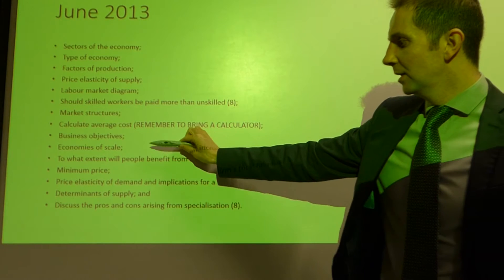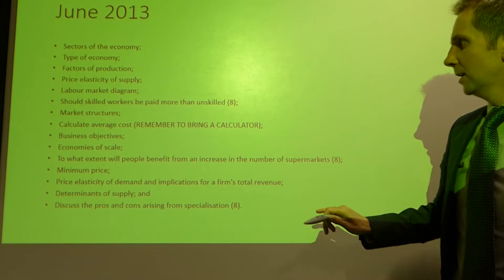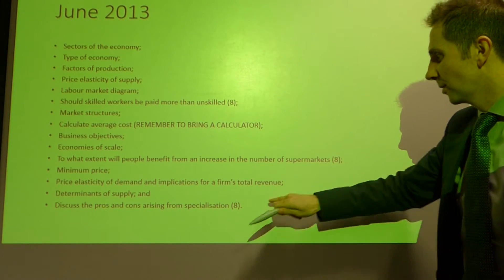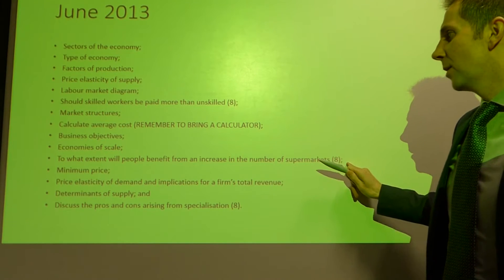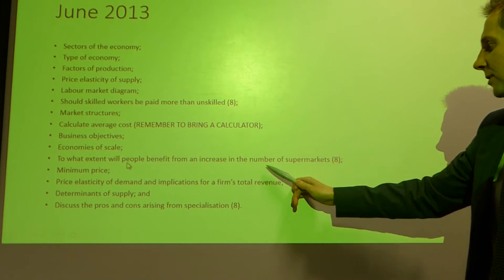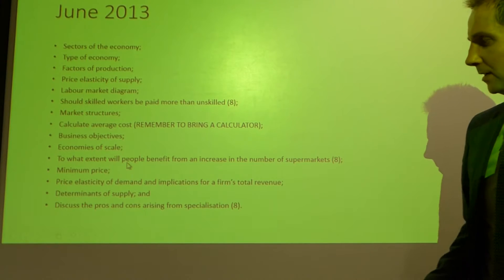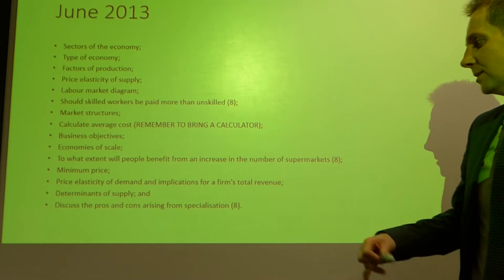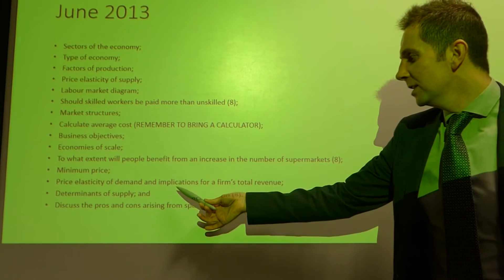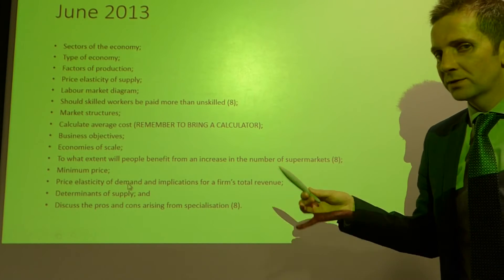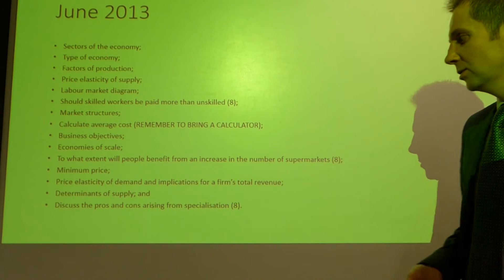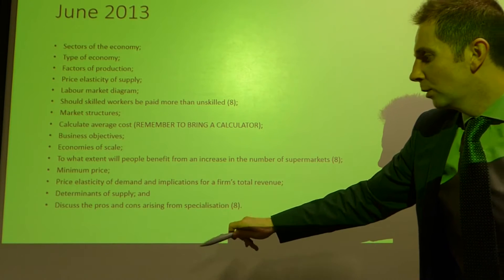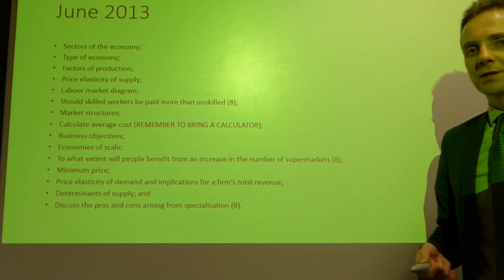We had a section on business objectives, economies of scale, and then three eight-mark questions — a real pattern there. One of them asked: to what extent will people benefit from an increase in the number of supermarkets? Then finally we had a minimum price diagram, price elasticity of demand and the interpretation of that, including the implications on a firm's total revenue — illustrated using a demand and supply diagram. Determinants of supply, and the final eight-mark question: discuss the pros and cons arising from specialisation.